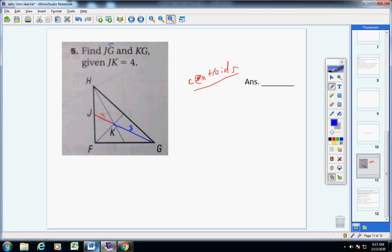Now, find JG. So, from J to G, the length would be 12, right? From here to here is four. From here to here is eight. Add those together. You get 12. So, there's one answer. Now, find the length of KG. So, here's K. Here's G. That length is what? Eight. So, the answer would be eight. I hope that helps.